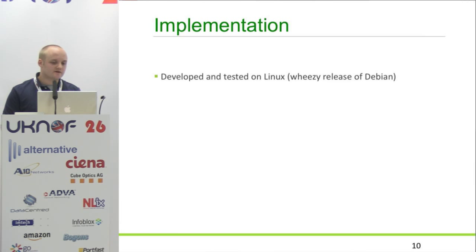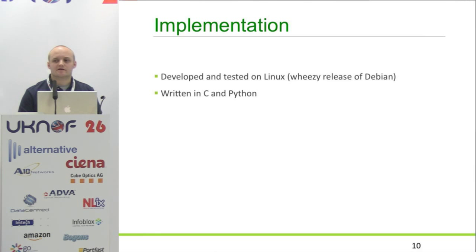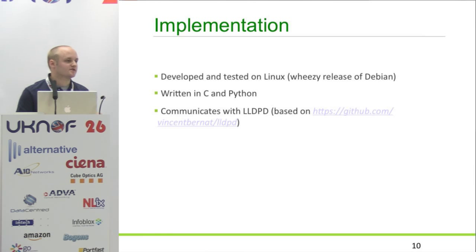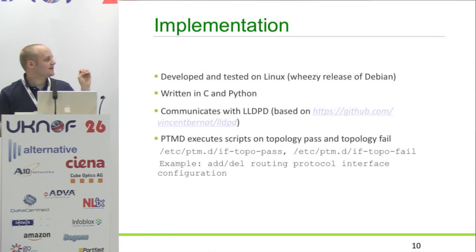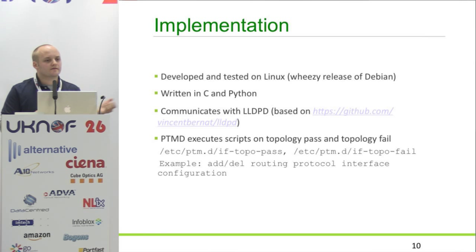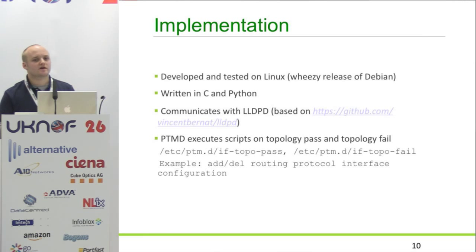We developed it on Debian Wheezy in particular. The PTMD daemon is written in C and the control CLI is written in Python. It uses a socket into LLDP. There are two triggers that can be kicked off based on the topology — either verifying or failing. In /etc/ptmd, if-topo-pass and if-topo-fail, you can put scripts that get kicked off if the cabling matches or fails. You can use that to poke Bird or Quagga or bring up some service on the box. This doesn't necessarily have to run on the switch — you can run it on any Linux-based platform.